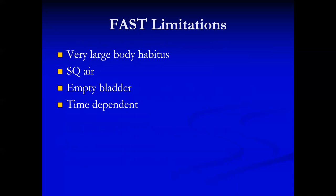Some limitations to the FAST exam: people with a very large body habitus can be difficult to scan. If there's a lot of subcutaneous air — especially if somebody has a pneumothorax with crepitus all the way down their abdomen and along their flanks — good luck getting those FAST images, because air is the enemy of ultrasound. An empty bladder can make things difficult because it's hard to see free fluid amongst loops of bowel. And remember that the FAST is time-dependent. If you do the FAST exam right after the injury and don't see free fluid, there probably just wasn't 200 to 300 cc's of blood yet for the FAST to be positive.